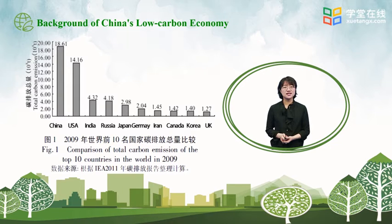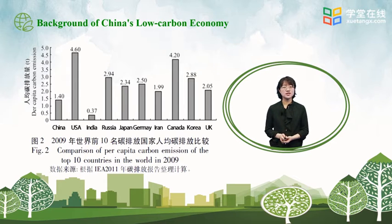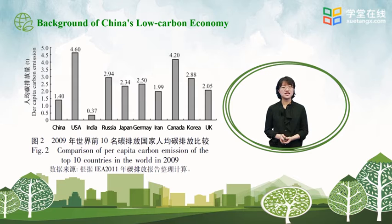Figure 2 shows the per capita emissions of the top 10 countries in 2009. China ranked only ninth with 1.4 tons per capita emissions. Except for India, the per capita emissions for the other eight countries were far above that of China. The per capita carbon emissions of the United States was approximately 3.3 times that of China, and Canada's per capita carbon emissions were also approximately 3.3 times that of China.